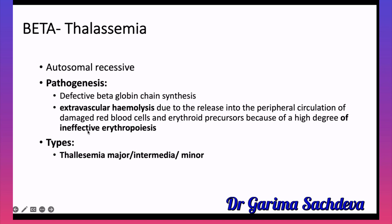There is extra-vascular hemolysis due to release into peripheral circulation of damaged red cells and erythroid precursor cells, resulting in ineffective erythropoiesis. It can be thalassemia major, intermediate, or minor. Major means both genes are defective and the patient is blood transfusion dependent; minor is the beta thal trait and may not require transfusion.